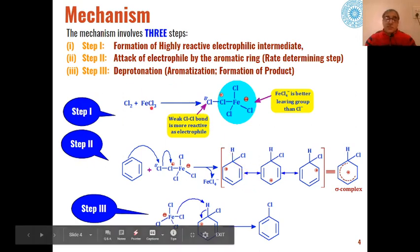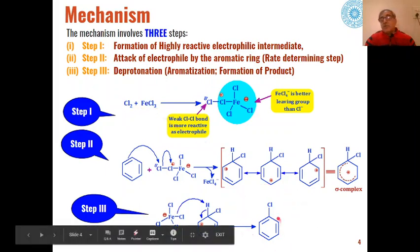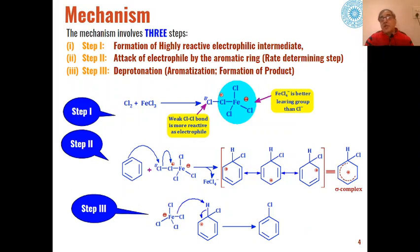The same mechanism applies when bromine is used instead of chlorine. Bromine reacts with FeBr3, and the leaving group in this case is FeBr4⁻, which is a better leaving group than Br⁻. Using bromine and FeBr3, the product formed is bromobenzene. By this general mechanism, any kind of aryl chloride, bromide, or iodide can be prepared through electrophilic aromatic substitution.